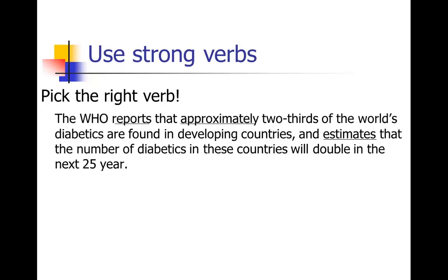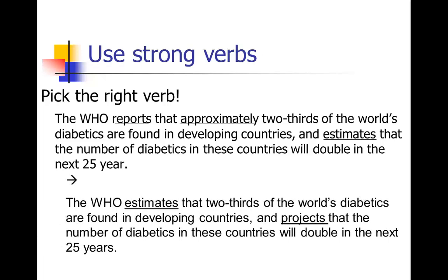I told you last week we're going to try to avoid the use of adverbs. One way to avoid adverbs is to pick the right verb that already has that adverb embedded in it. So what do you mean by 'reporting approximately'? Another way to say that is 'estimates.' That verb used in the second part of the sentence is actually perfect for the first part — they're estimating. And since we've now used 'estimates' in the first part, we might want a better verb for the second part. If you're estimating something in the future, a slightly better verb is 'projects' — it gets that idea of the future in there. So these slightly better verbs make a big difference. Use a thesaurus to help find the absolute best verb.